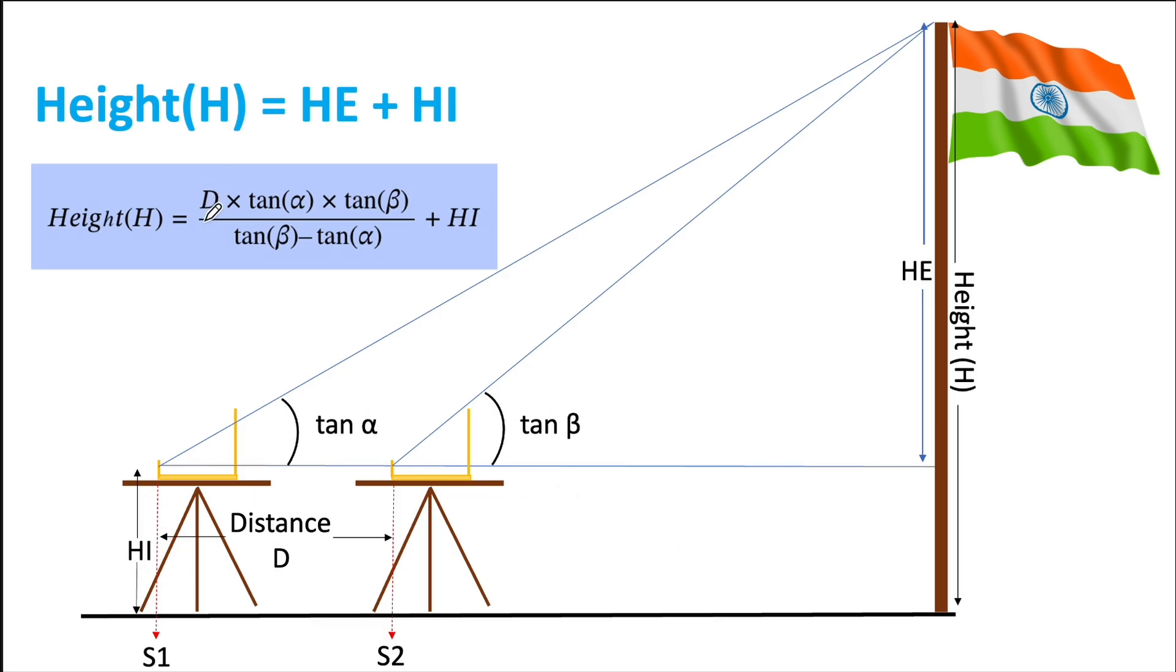He will be distance times tan α times tan β divided by (tan β minus tan α). This gives us the final height of the object.